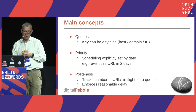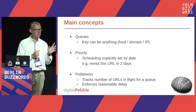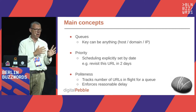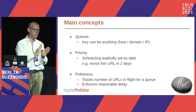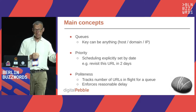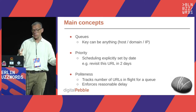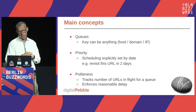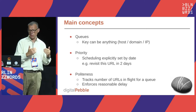URL Frontier also enforces politeness. It tracks the URLs currently being processed by crawlers and ensures no more URLs for a particular queue are provided until those complete. It also enforces a reasonable delay between calls from a particular queue. This way, the crawler won't get loads of URLs for a single host at once, and you get good diversity of sources — ideal for politely crawling. By delegating the politeness logic to URL Frontier, you make your crawler code a little bit simpler.